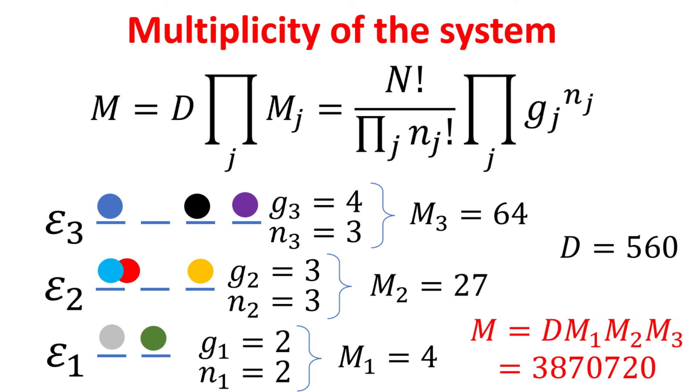Certainly, the multiplicity for classical distinguishable particles is larger than its quantum indistinguishable counterpart, which will be discussed in separate videos on Fermi-Dirac statistics and Bose-Einstein statistics, with the links in the description.